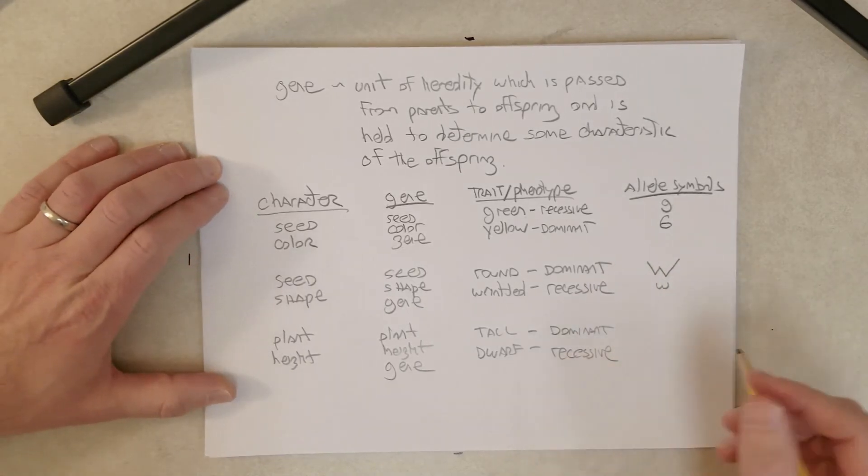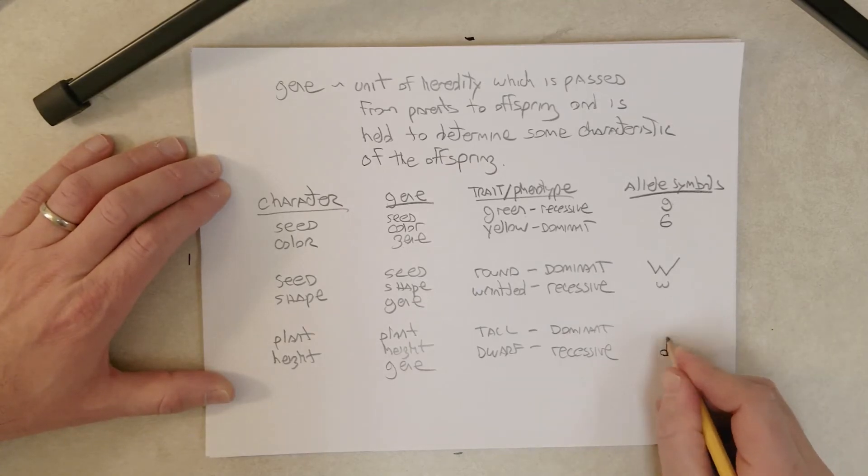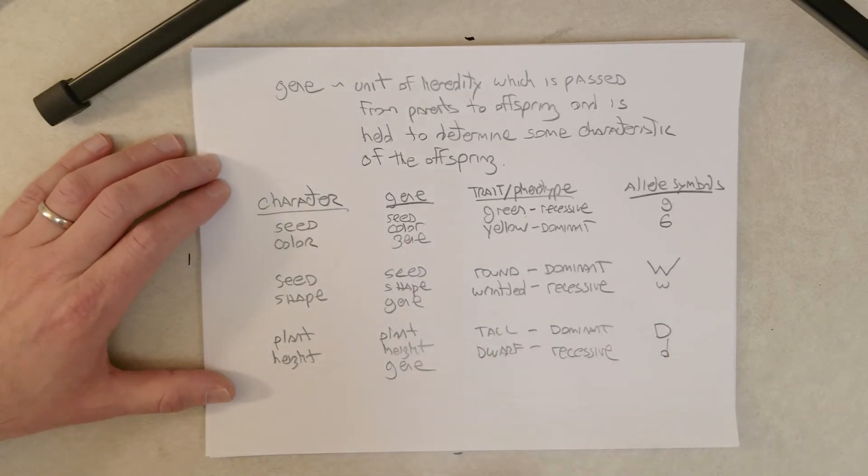Tall and dwarf, I can give you a second to think about that. What do you think we're going to use for the symbol? Little d, little d, and big D. So big D for tall, little d for dwarf.